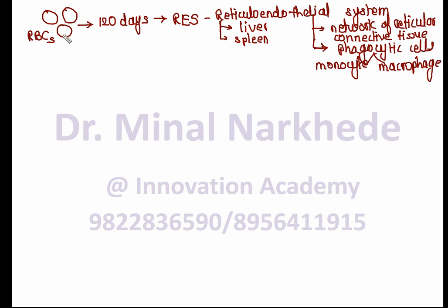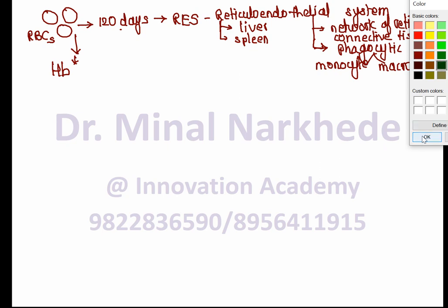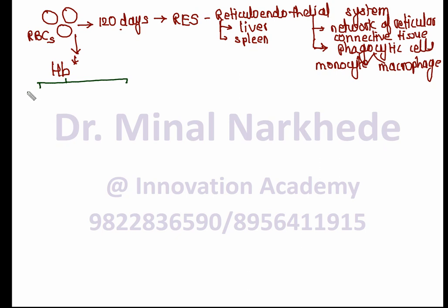RBCs are degraded or cleaved by phagocytic cells. When RBCs are broken open, hemoglobin is released. Hemoglobin is a conjugated protein made up of two components: a protein part called globin, and a non-protein part called heme. Any protein consisting of both a protein and a non-protein part is called a conjugated protein.